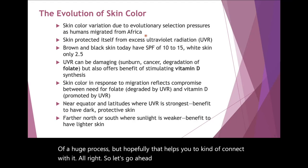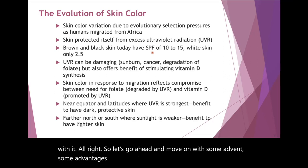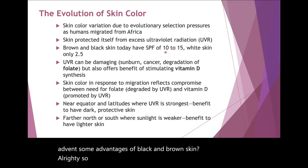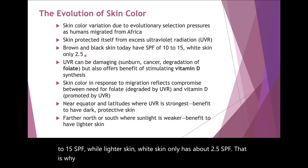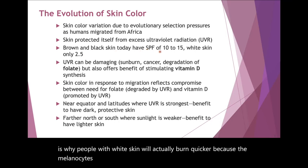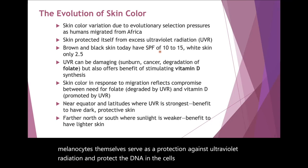What are some advantages of black and brown skin? The darker skin has a higher SPF, about 10 to 15 SPF, while lighter white skin only has about 2.5 SPF. That is why people with white skin will actually burn quicker, because the melanocytes themselves serve as protection against ultraviolet radiation and protect the DNA in the cells from getting damaged.